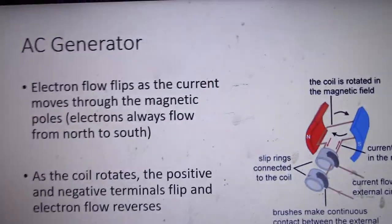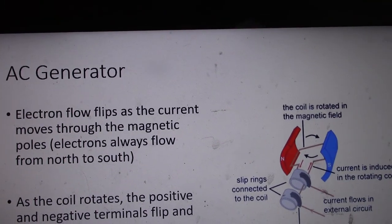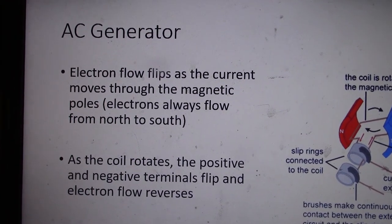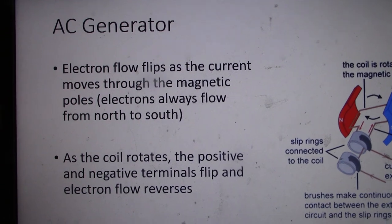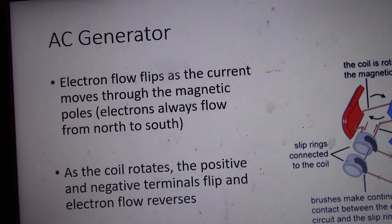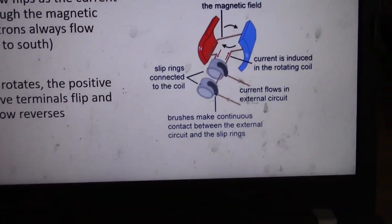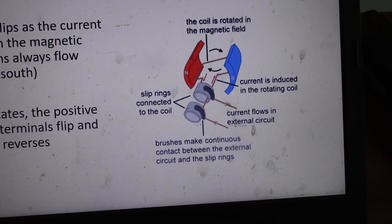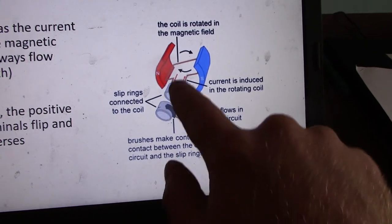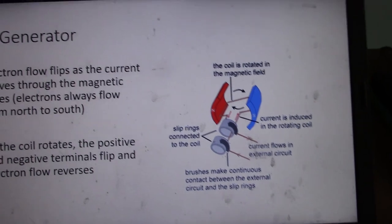You need to be able to recognize the difference between an AC generator and a DC generator and motors. In an AC generator, the electron flow flips as the current moves from magnetic poles — as the coil rotates, the positive and negative terminals flip. What types of commutators are attached to the armature will determine whether something is AC or DC.